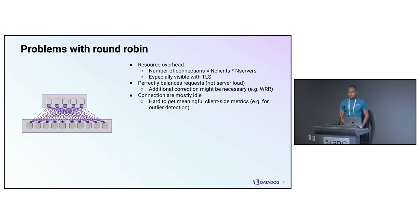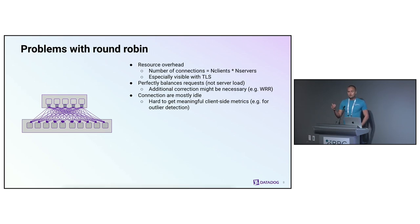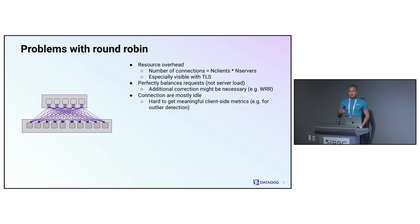The major problem with round robin is the number of connections it creates. Those connections are mostly cheap but not exactly free, and you can see this overhead especially with TLS. Another issue is that it perfectly balances requests but not server-side load, which is the metric most people care about. The last problem is that because of how many connections it manages, it makes every connection very poorly utilized, which makes it very hard to get meaningful client-side statistics per connection. I'll talk about why this is a problem later.